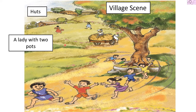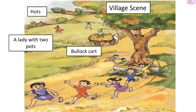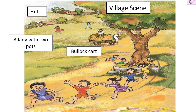Then we can see a bullock cart — here is the bull and here is the cart. We can see a bullock cart and the rider is here. This bullock cart is carrying hay for the cattle.